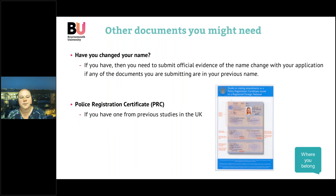There are some other documents you might need. If your name now is different to the name you were born with — because you've changed your name officially, or gotten married or divorced — you must submit evidence of your name change. Also, if you've already been in the UK and had to register with the police, you need to send your police registration certificate with your visa application. If your name has never changed and you've never had a police registration certificate, you don't need to worry about these documents.